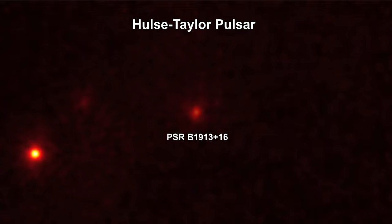They found one. It's named PSR B1913-16, and it led to the first indirect verification of Einstein's prediction.